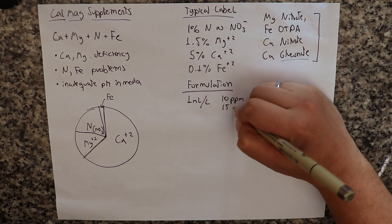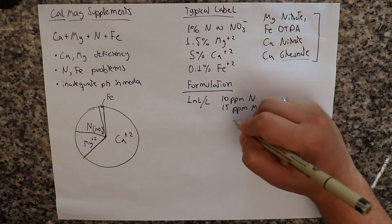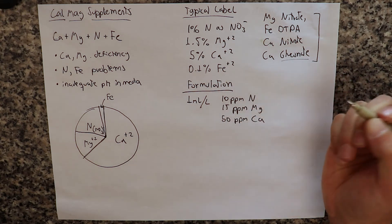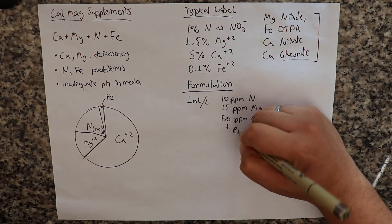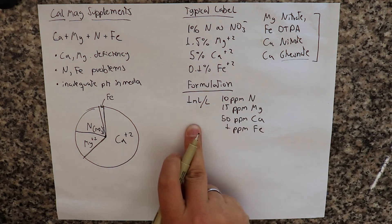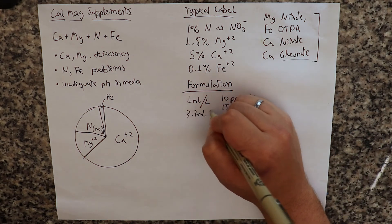You would have 15 ppm of magnesium, you would have 50 ppm of calcium, and you would have 1 ppm of iron. So this would be a 1 milliliter per liter application rate, or around 3.7 milliliters per gallon.